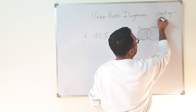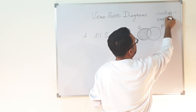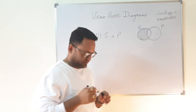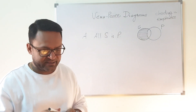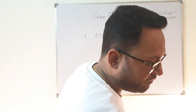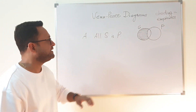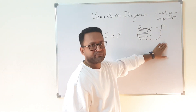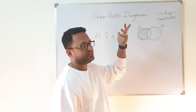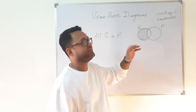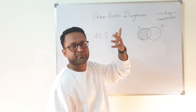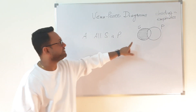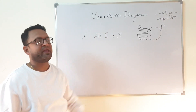Shading is equivalent to emptiness — that is the key idea. When we say 'all S is P,' we mean the part of S which is not in P does not exist. There is nothing there, and this emptiness is represented with the help of shading.